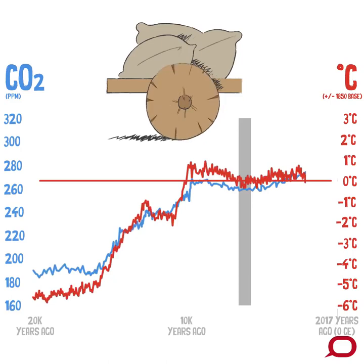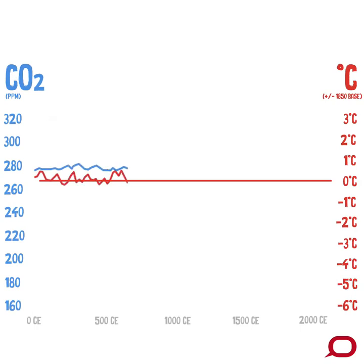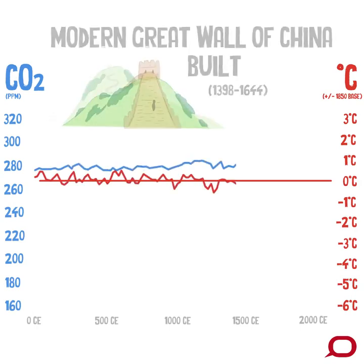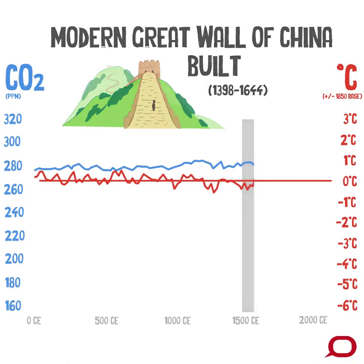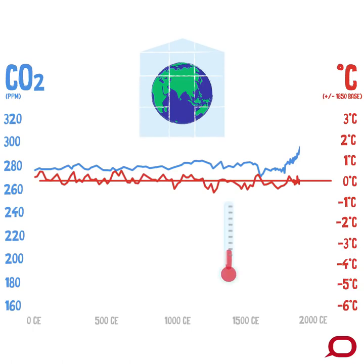And the wheel. And the pyramids in Egypt. And now we hit the common era, the year 0 CE. At this point, the world population is just 200 million people. And here's where scientists first demonstrate the greenhouse effect of carbon dioxide, way back in 1861. It would take until 1938 for scientists to show that the Earth was warming, and propose that CO2 was the cause.